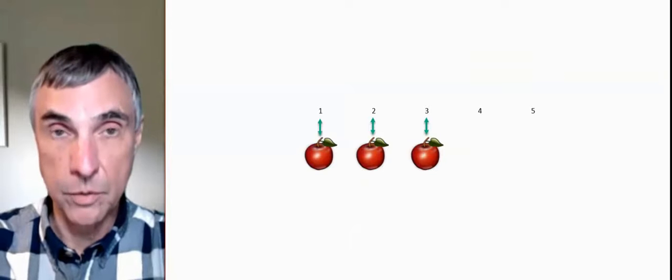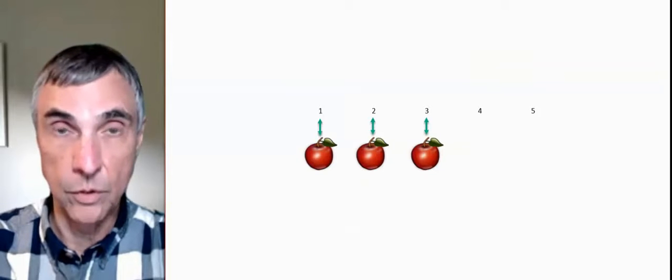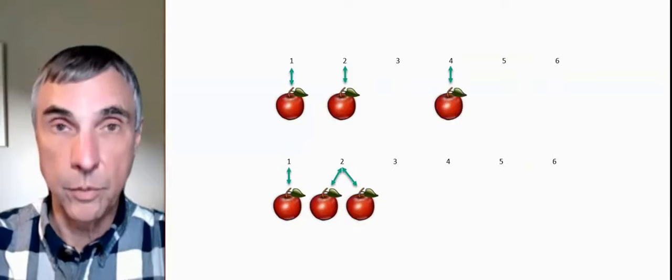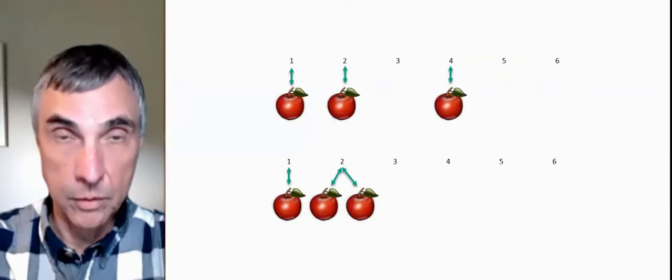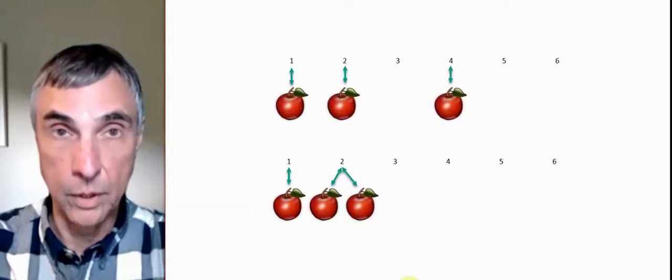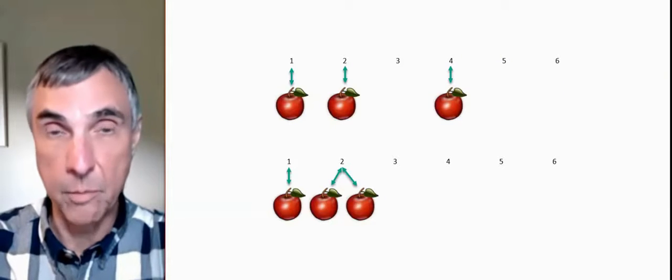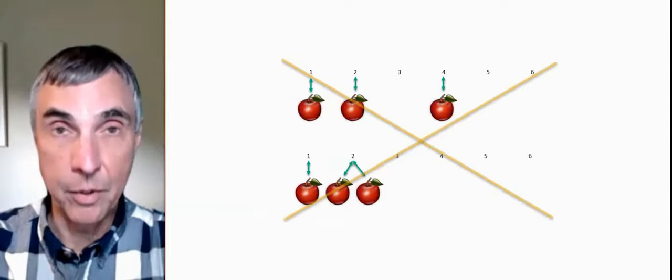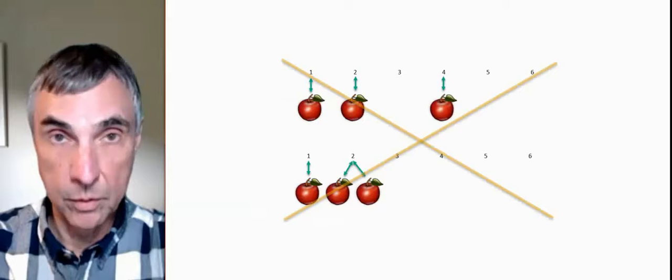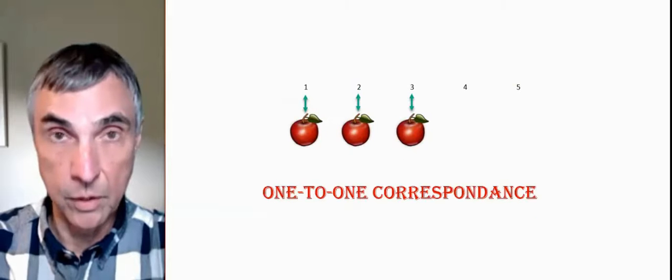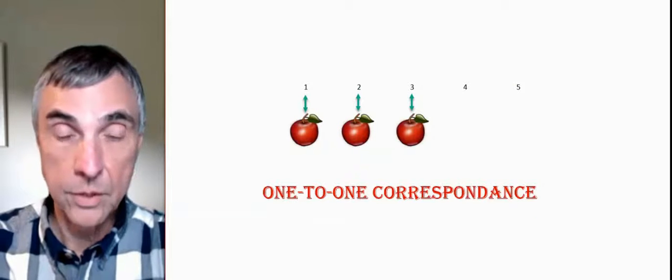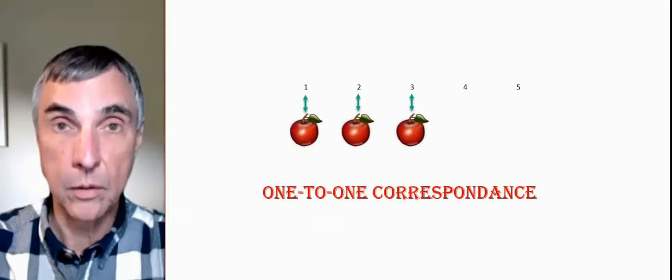Now, we don't skip numbers, so we don't pair off with 1, 2, skip 3, and then pair off with 4 and say there's four apples. And also, we don't give two apples the one number, like we could pair off one apple with number 1, but then the remaining apples with number 2. So we don't say there's two apples or four apples. We say there's three apples because each apple has one and only one number, and each number has one and only one apple, and there's no gaps. This is what's called a one-to-one correspondence.